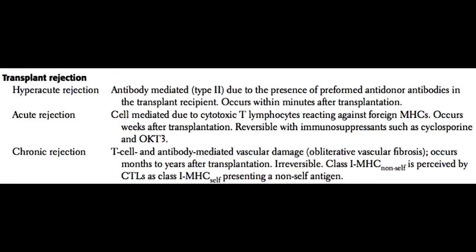In chronic rejection, there is eventually fibrosis of the graft tissue and graft dysfunction, and if given enough time, these patients — like those with acute rejection — will require a new organ.